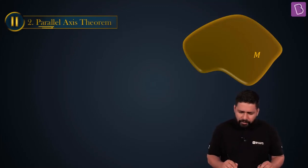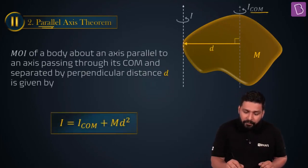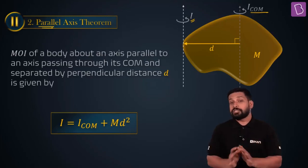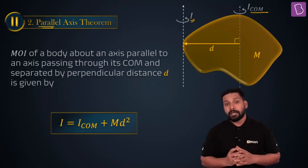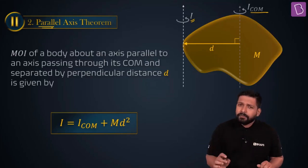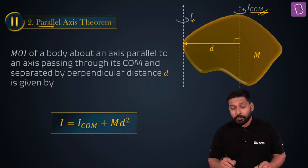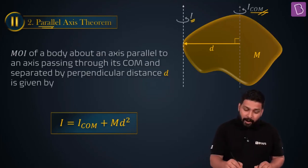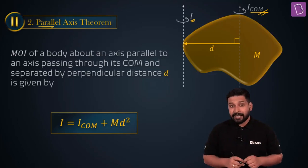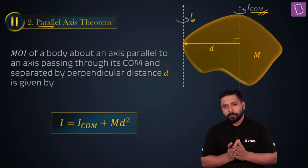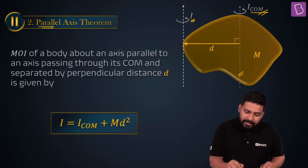Consider a body of mass m. If I say that the moment of inertia about the center of mass is known to us, and I ask you to find the moment of inertia about this axis — the concept of axis is absolutely clear — when I say this is the axis, you can immediately imagine how the rotation is taking place. So you have two axes: one is the natural axis of the body passing through the center of mass and perpendicular to the plane in this case, and another one is this particular axis.